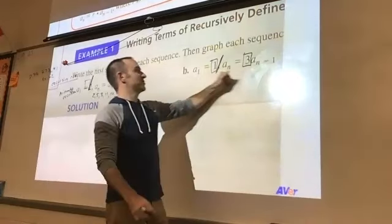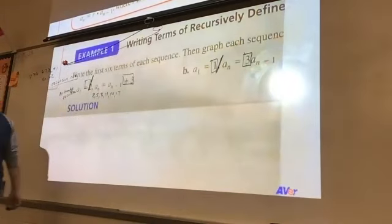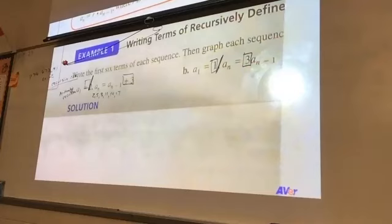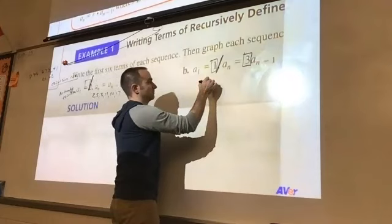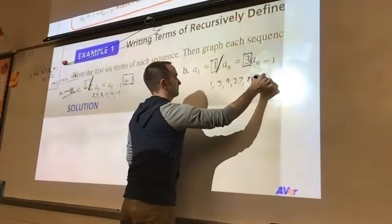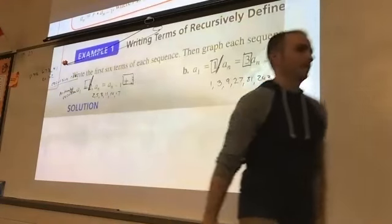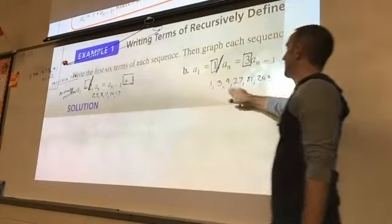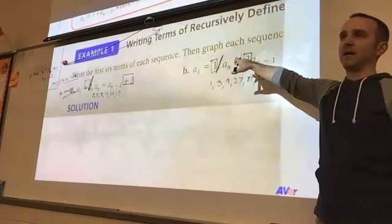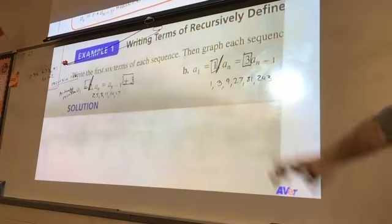So it's our first term, and then what we're doing every time. Go ahead and find the first six terms. We got our first six: 1, 3, 9, 27, 81, 243 — we're multiplying by three every time. Any questions so far?